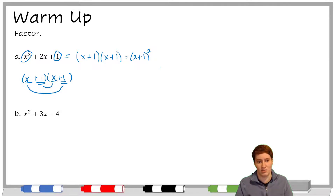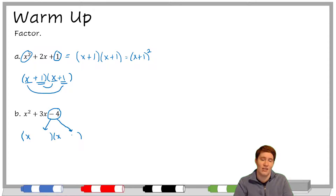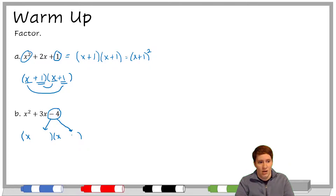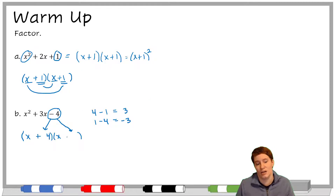They can be trickier because most of the time there are more options to go through. For part B, x squared plus 3x minus 4, we're still going to split x squared into x and x. Let's take a look at this negative 4 — what multiplies to get negative 4 that will add to get 3 from the middle term? We could do 1×4 or 2×2, but one number has to be negative. 4 minus 1 gives us positive 3, so the 4 needs to be plus and the 1 needs to be minus.